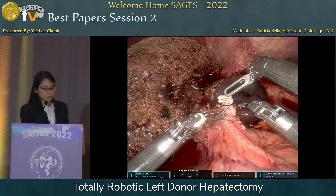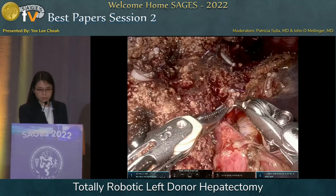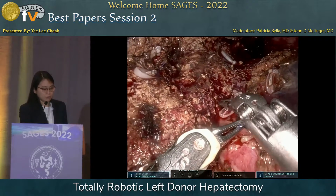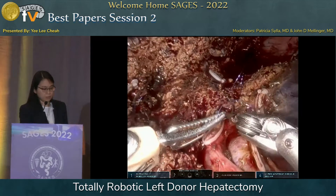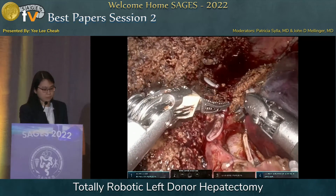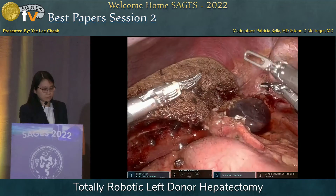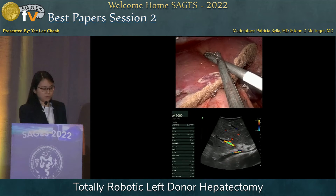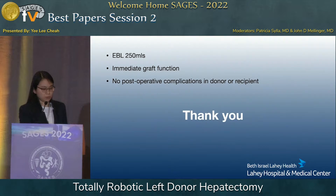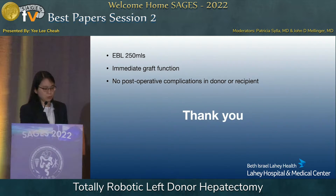The graft is gently inserted into a plastic bag and retrieved via a Pfannenstiel incision. As completion, the artery is ligated and the bile duct stump is suture ligated. There is no bleeding or bile leak. A final check of the remnant confirms adequate vasculature. EBL was 250 mLs. There was no post-operative complication in the donor or recipient. There was immediate graft function.